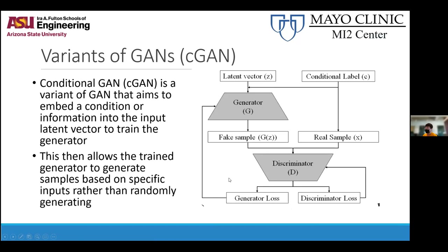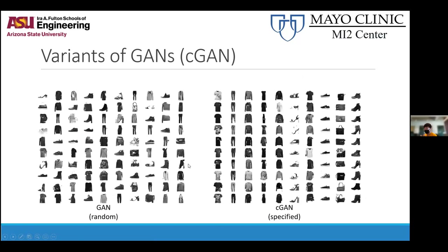In a regular GAN, if you just ask it for a sample, it will give you whatever it wants — a shoe, pants, or purse. But with a conditional GAN, or some conditional input tuned during training, you can say generate some t-shirts, generate some pants, and you can focus the generation. The losses are based on the conditions input to the discriminator as well.